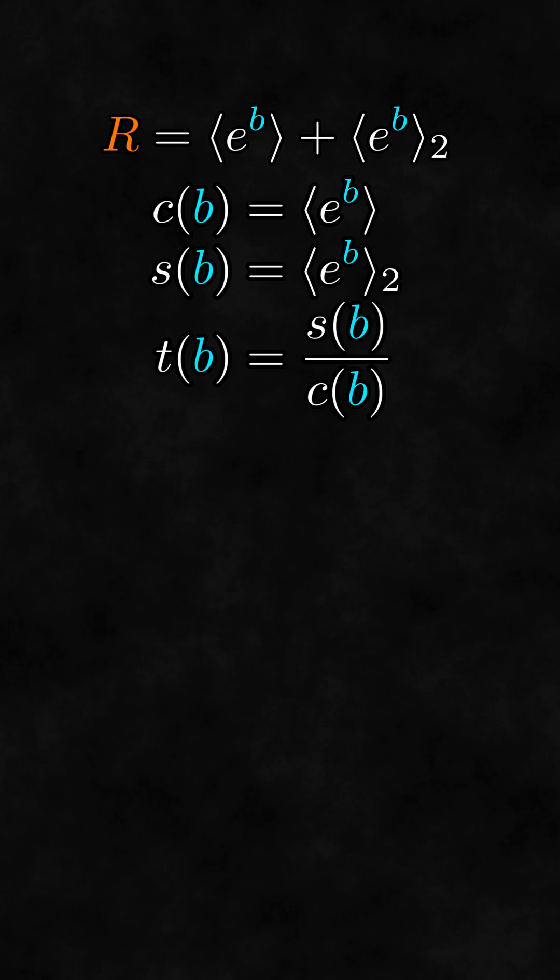One interesting thing you can do with this idea is to take a rotor and factor out the generalized cosine. Because the generalized cosine is a scalar, this shows that 1 plus the generalized tangent is a scalar multiple of the rotor.